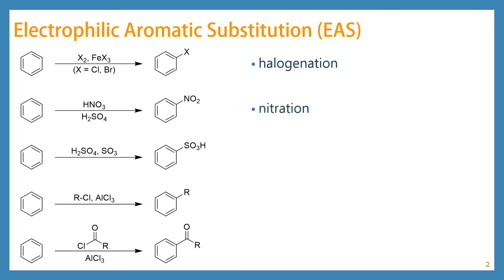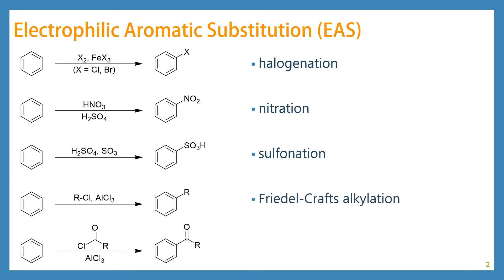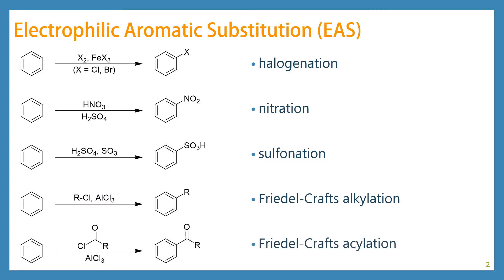Our next one is nitration — the addition of a nitro group to the benzene ring, replacing the hydrogen. The next reaction is sulfonation, where the hydrogen has been replaced by a sulfonic acid group. The next type is Friedel-Crafts alkylation, where a hydrogen atom has been replaced by an alkyl chain, using aluminum trichloride as a Lewis acid catalyst. And then we have Friedel-Crafts acylation, where we are adding on an acyl group — referencing the carbonyl group.